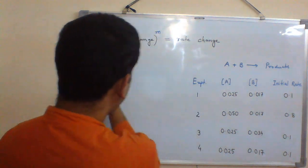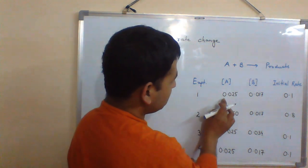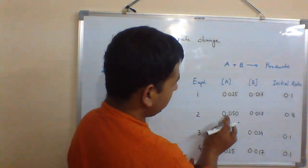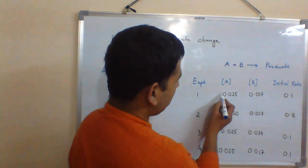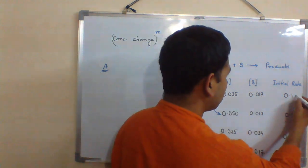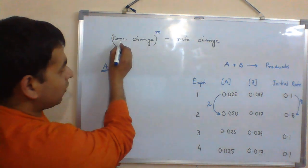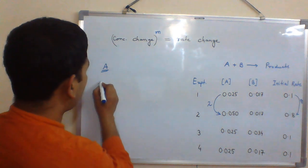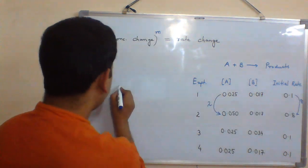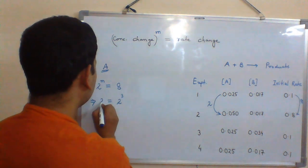Let's take the case of A. For experiment 1, the concentration is 0.025 and for experiment 2, the concentration is 0.050. So from here to here, the concentration changes by 2 times and the corresponding change in rate is 8 times. So change in concentration is 2 power M and rate change is 8.